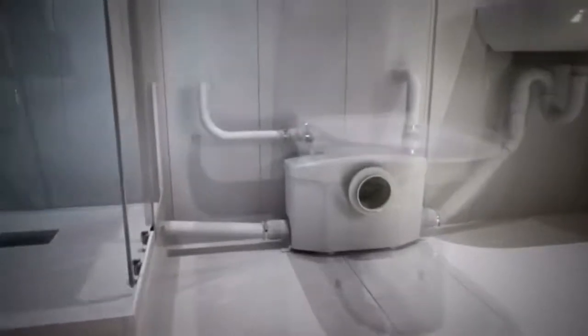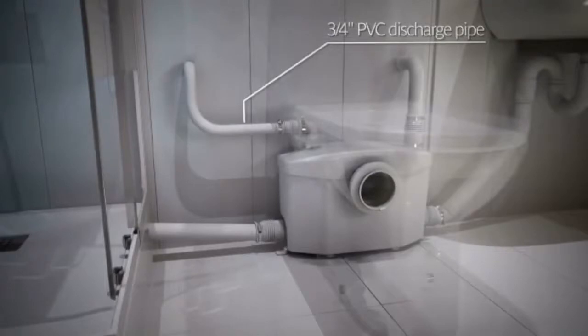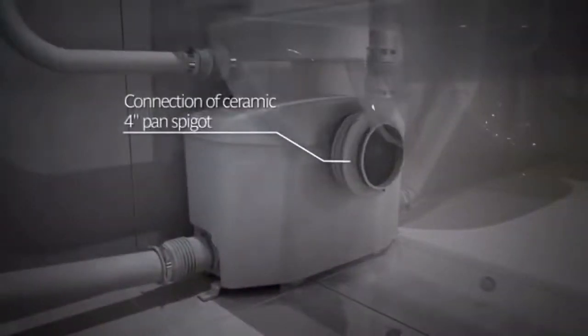Using the provided discharge elbow, connect your 3-quarter inch discharge pipe. Then connect the toilet to the main inlet of the pump using the 4-inch coupling provided.